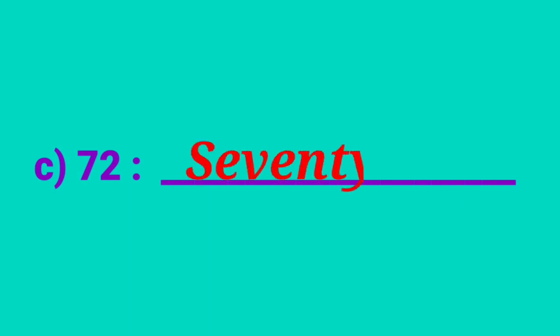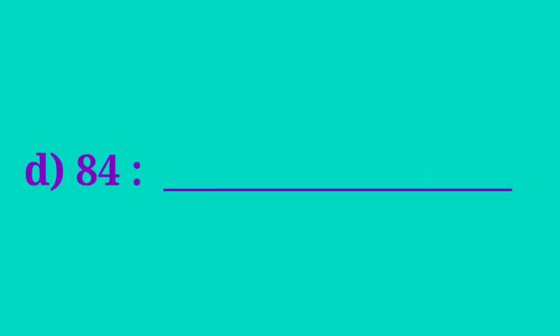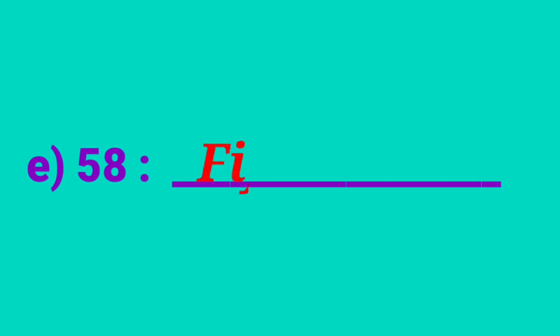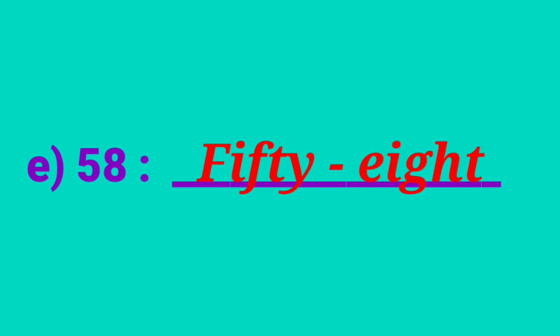The next numeral is 72. The number name of 72 is S-E-V-E-N-T-Y T-W-O — seventy-two. And the next is 84. The number name of 84 is E-I-G-H-T-Y F-O-U-R — eighty-four. And what is this numeral? 58. The number name of 58 is F-I-F-T-Y E-I-G-H-T — fifty-eight. You should not write it as 58; that is wrong.